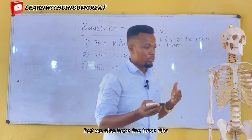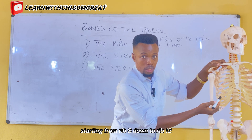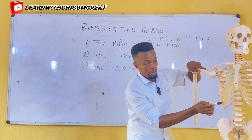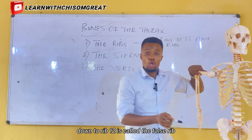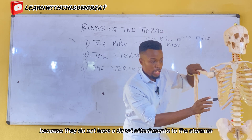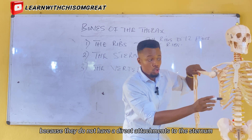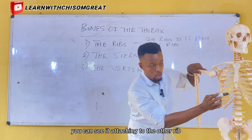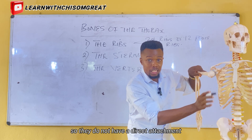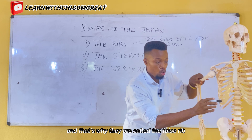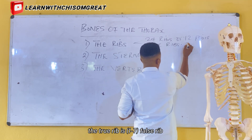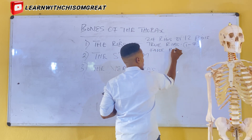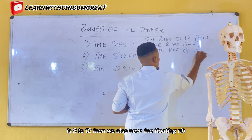We also have the false rib, starting from rib 8 down to rib 12. They are called the false rib because they do not have a direct attachment to the sternum. Rather, they attach to other ribs. The true rib is 1st to 7th; the false rib is 8th to 12th.